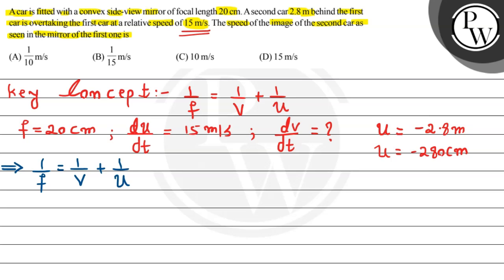So f is a constant value, so it will become zero. It will be equal to 1/v derivative will be minus 1/v² dv/dt plus here it will be minus 1/u² du/dt.